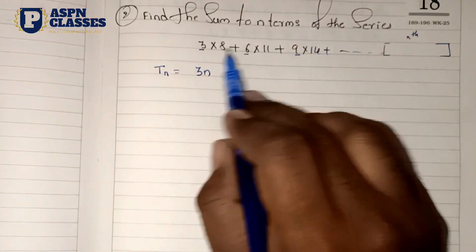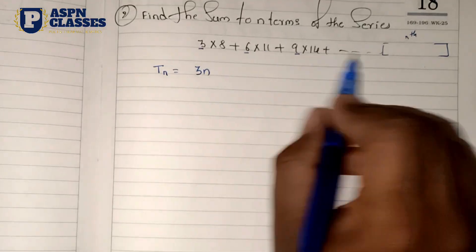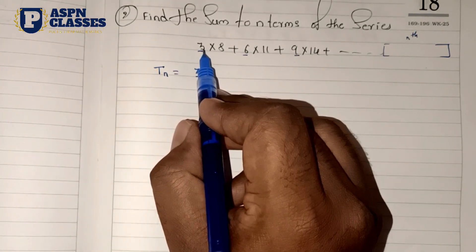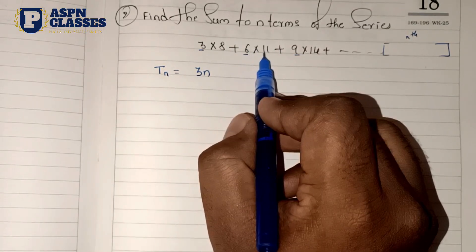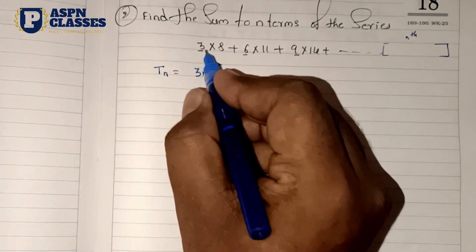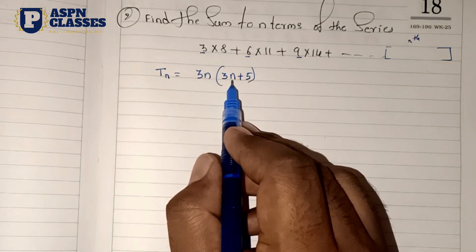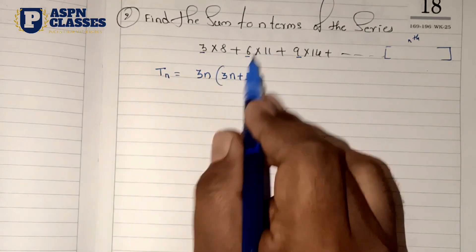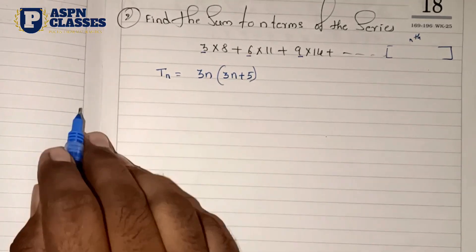Now we observe the second part of the series: 8, 11, 14. We don't have a fixed times table result here. But observing the pattern: 3+5=8, 6+5=11, 9+5=14 — so we have a fixed difference of plus 5. If we fill in: 3×1=3, 3+5=8; 3×2=6, 6+5=11; 3×3=9, 9+5=14. This is correct.